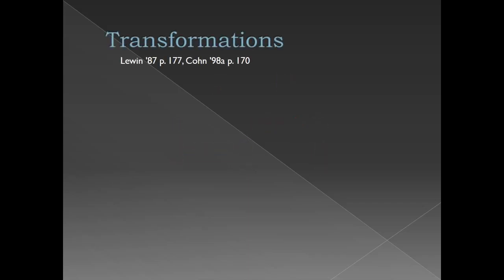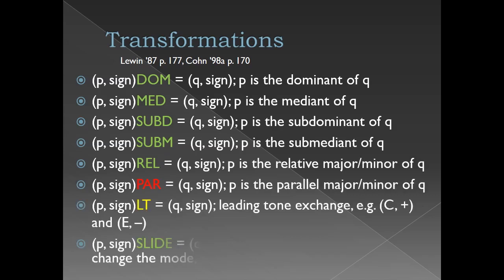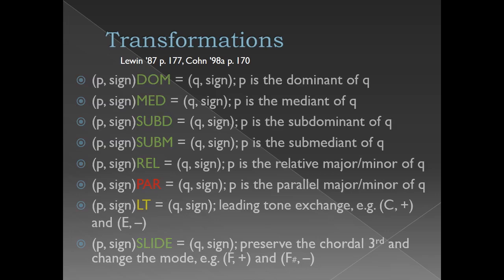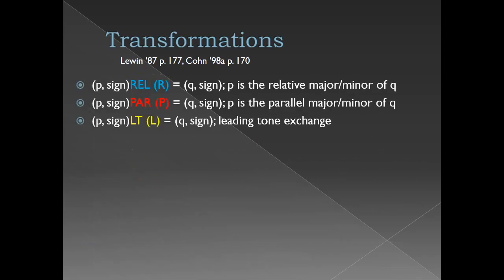Here is a list of all of the transformations denoted in the early Neo-Riemannian writings of David Lewin and Richard Cone. Do not be alarmed by the sheer number of them. Most other functions can be derived from three main transformations: relative, parallel, and leading tone, which we will henceforth refer to as R, P, and L.